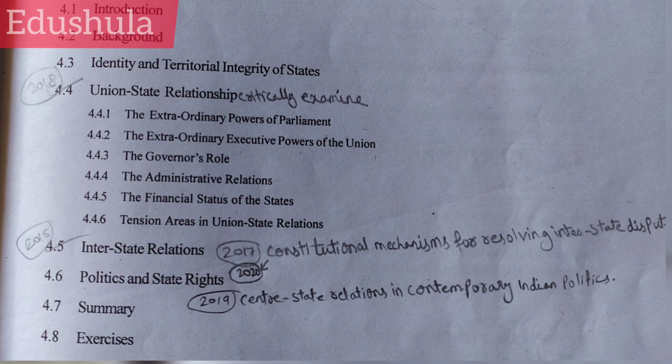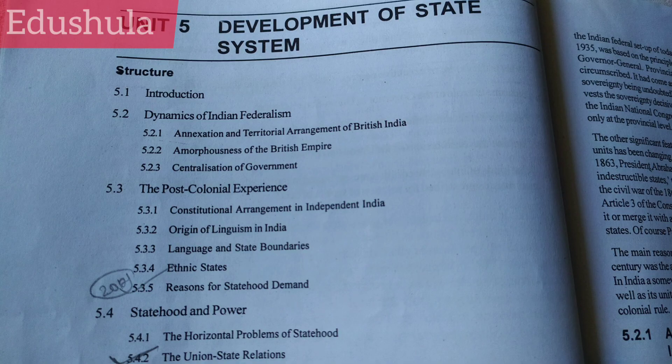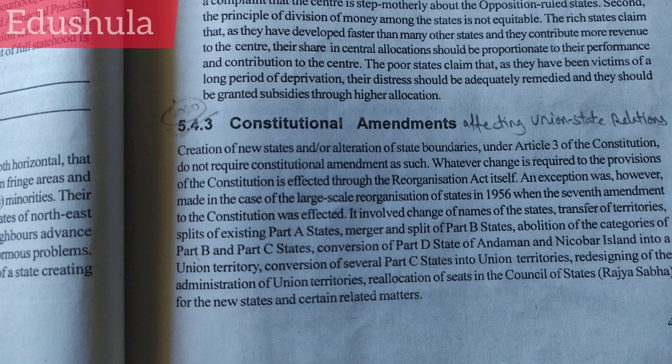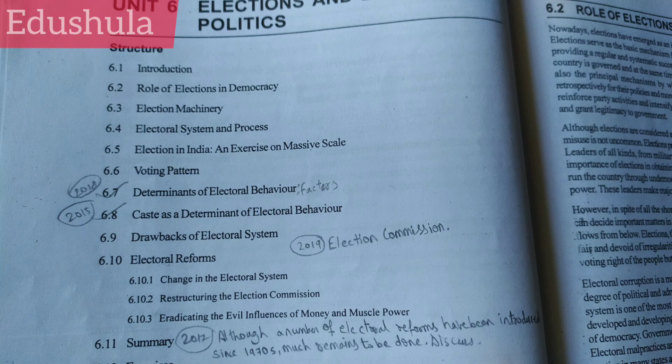Union-State Relationship. Constitutional Mechanisms for Resolving Inter-State Disputes. Centre-State Relations in Contemporary Indian Politics. Inter-State Relations. From Unit 5: Reasons for Statehood Demand. Constitutional Amendments Affecting Union-State Relations. From Unit 6: Determinants of Electoral Behavior. Factors of Electoral Behavior. Caste as a Determinant of Electoral Behavior.